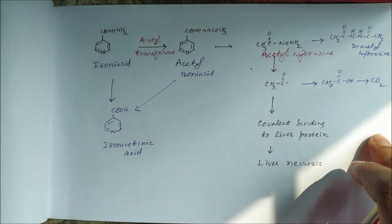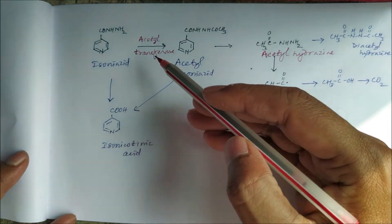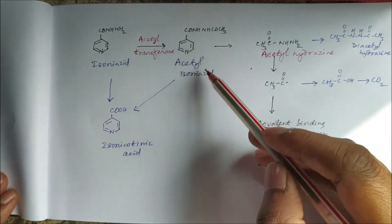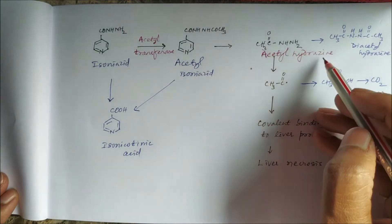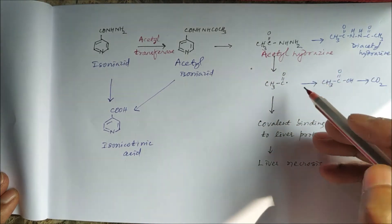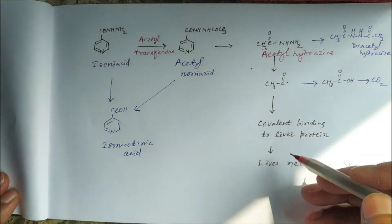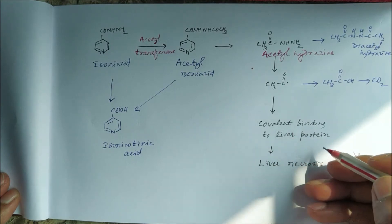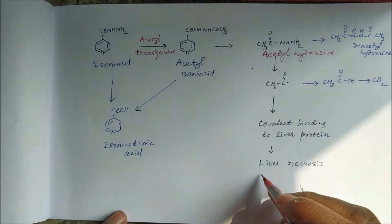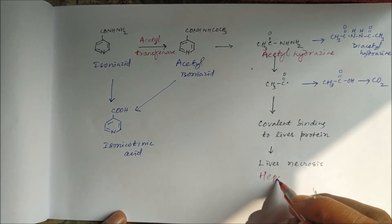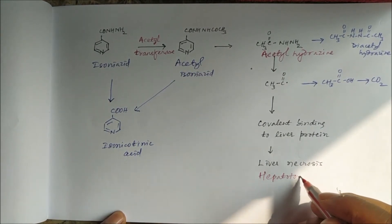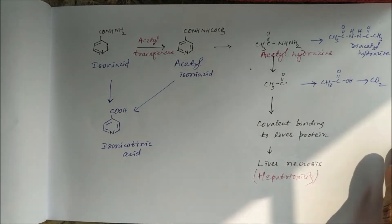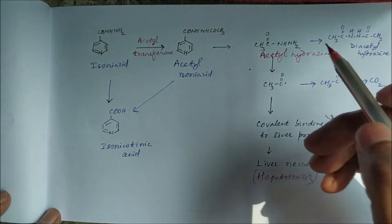Isoniazid is metabolized by the enzyme acetyltransferase to acetyl isoniazid, which is then converted to acetylhydrazine. This acetylhydrazine provides an acetyl group that binds covalently to liver proteins, causing liver necrosis or hepatotoxicity. So one of the side effects of isoniazid is hepatotoxicity, and the enzyme involved is acetyltransferase.